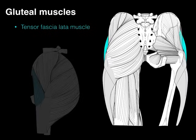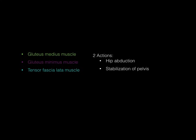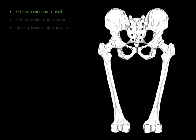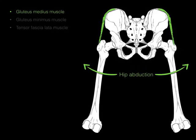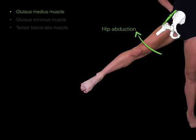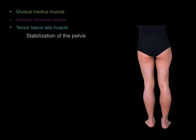The IT band goes all the way down the thigh to the tibia. Now let's look at the two actions. The gluteus medius, minimus, and tensor fasciae latae — often abbreviated as TFL — are grouped together because they share two actions: hip abduction and stabilization of the pelvis. For hip abduction, the gluteus medius when it contracts pulls the femur out into hip abduction.